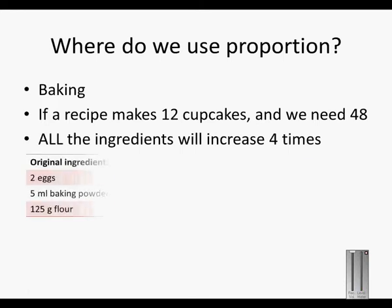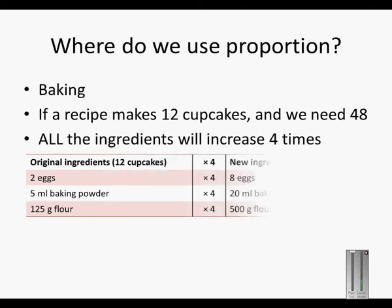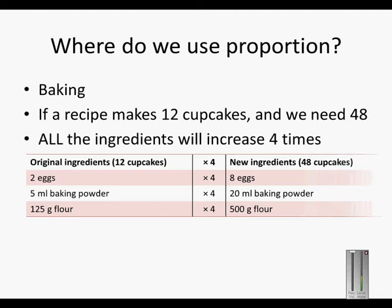The original ingredients for 12 cupcakes are: 2 eggs, 5 milliliters of baking powder, and 125 grams of flour. Now because we want 4 times as many cupcakes — we don't want 12, we want 48 — we have to increase the ingredients four times.